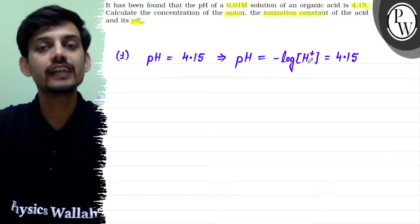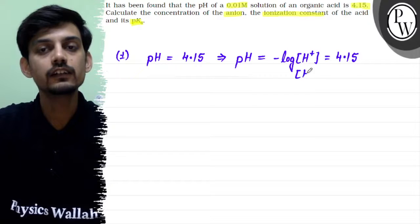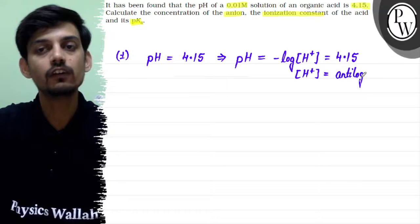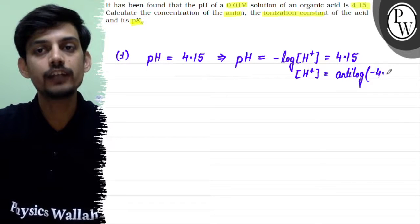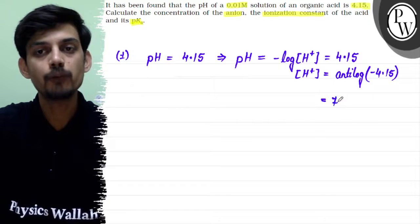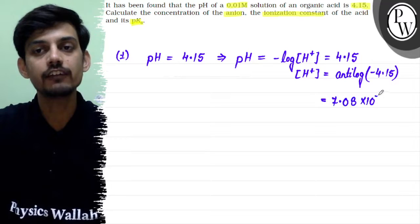pH is actually an indirect way to express the concentration of H plus. From here, the concentration of H plus will become antilog of minus 4.15. This will come out as 7.08 times 10 to the power minus 5 moles per liter. This would be the concentration of H plus ion in the given organic acid.